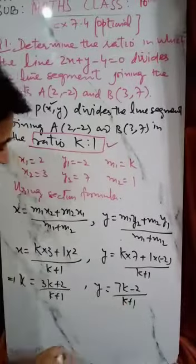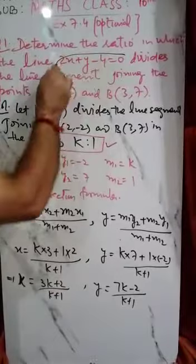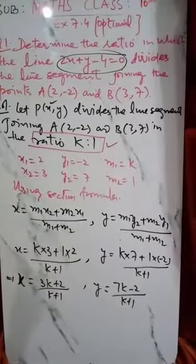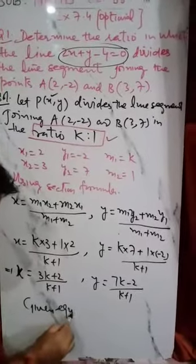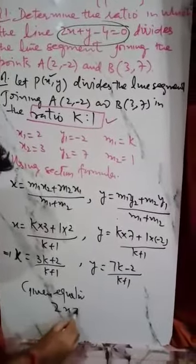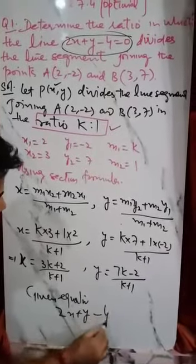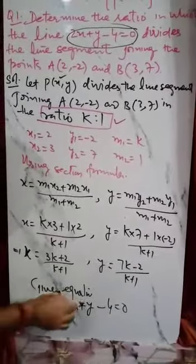Now these x and y values we will substitute in the given equation. So the given equation is 2x + y - 4 = 0. So we put x value and y value here.